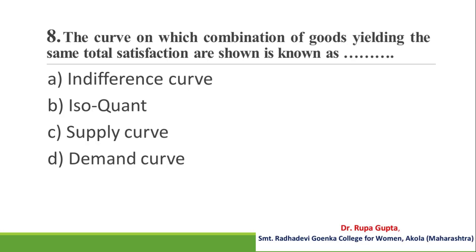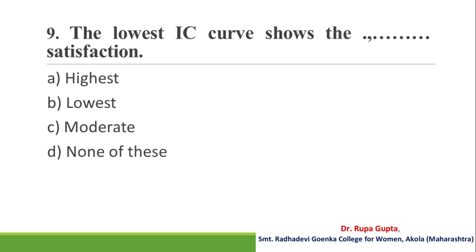Question number 8: The curve on which combinations of goods yielding the same total satisfaction are shown is known as — A. Indifference curve, B. Isocont, C. Supply curve, D. Demand curve. And the correct answer is A, Indifference curve.